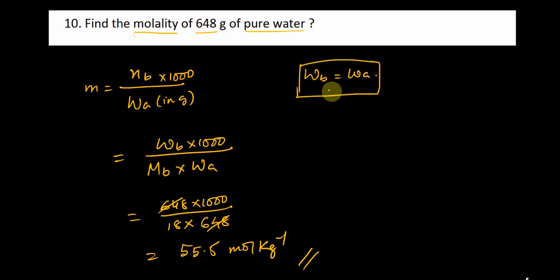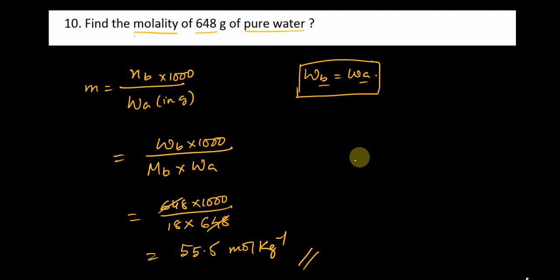There is no separate solute and solvent here — they have just asked you the molality of pure water. The answer is 55.5 mol per kg. Thank you everyone. Keep practicing these DPPs — they are very important. As you practice, your confidence will increase. These are foundational questions that will take you to a more advanced level of problem solving.